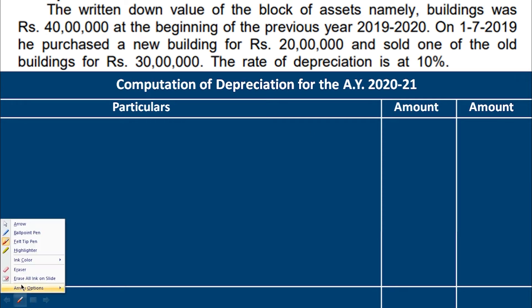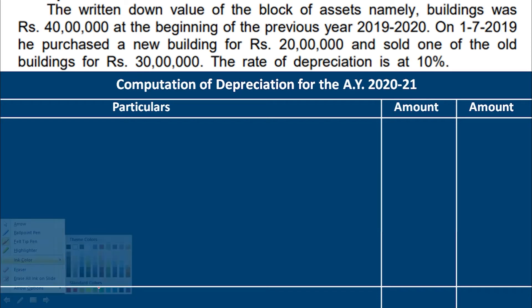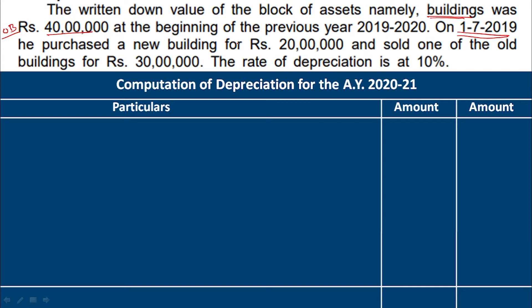So, this is one block of asset — only one block of asset, that is a building. We have Rs. 40 lakh at the beginning of the previous year, so this is our opening balance. Then, on 1-7-2019, he purchased a new building for Rs. 20 lakh. In this date, you will be able to use 180 days — 50% is to be charged if less than 180 days.